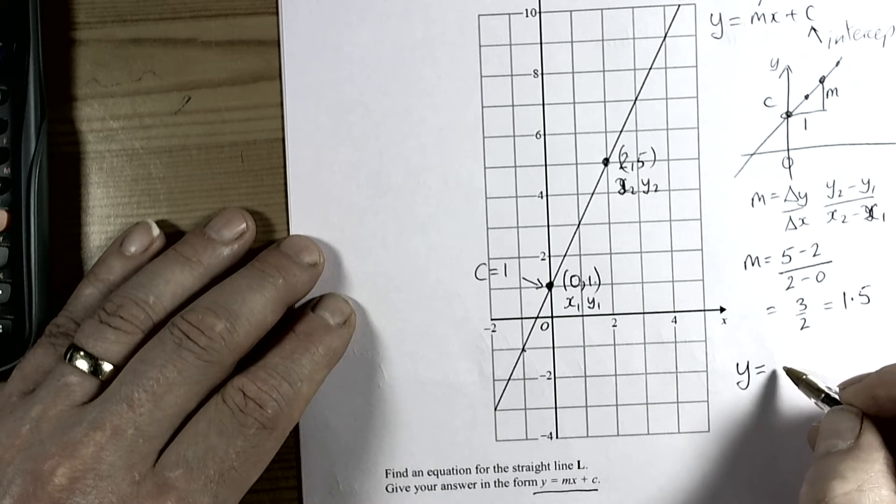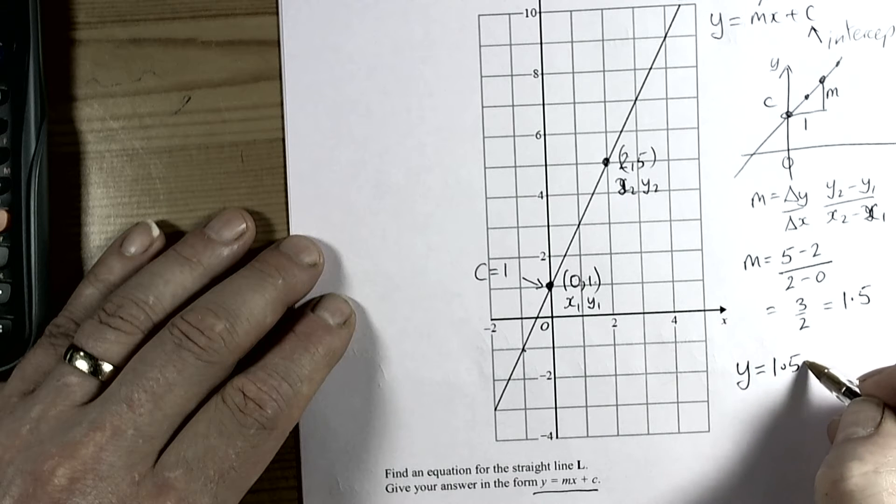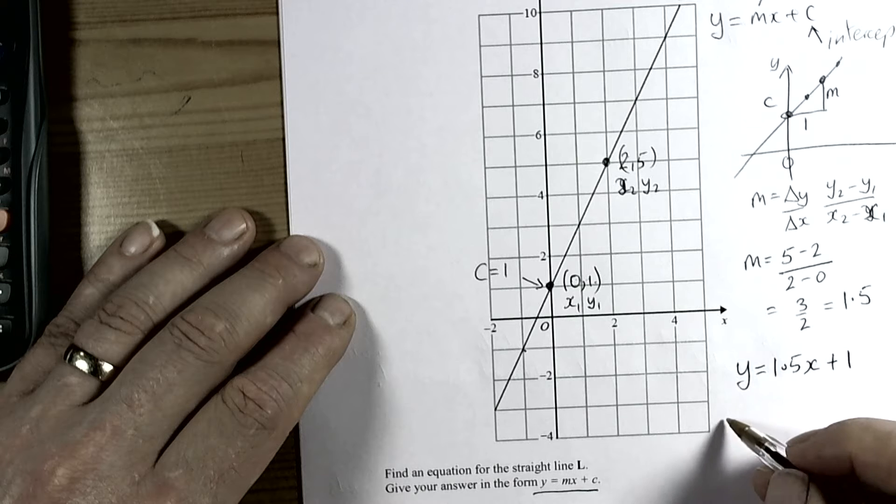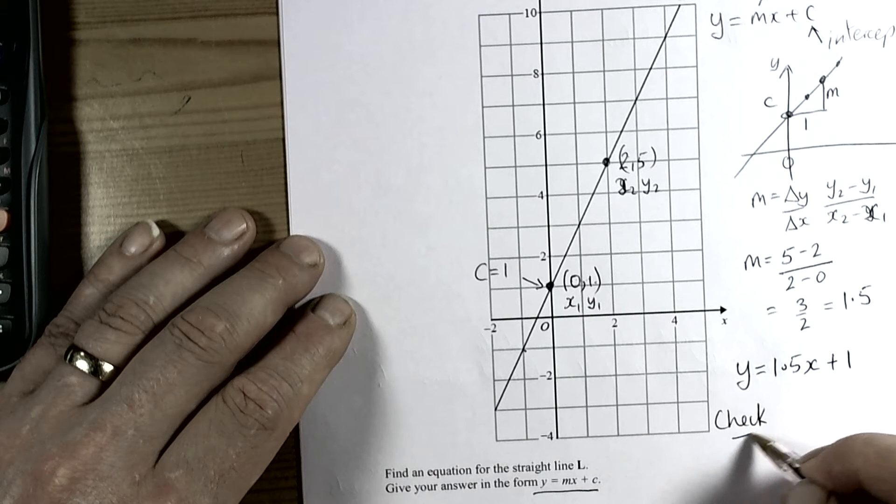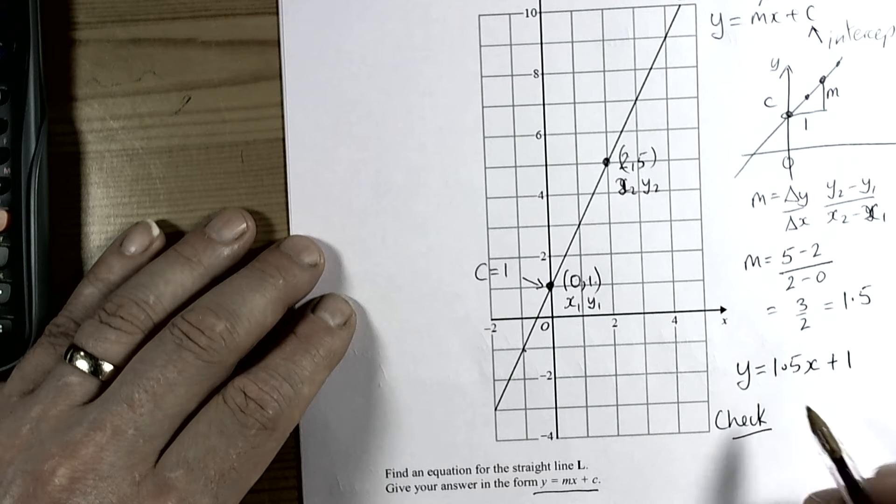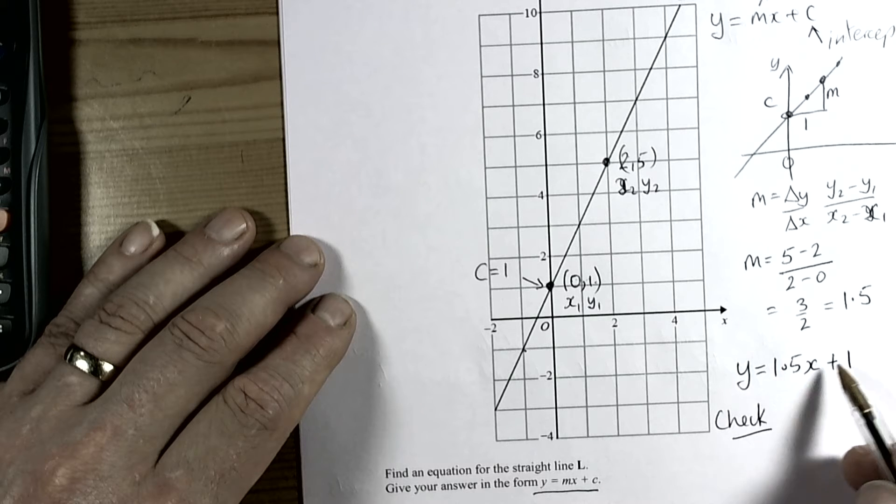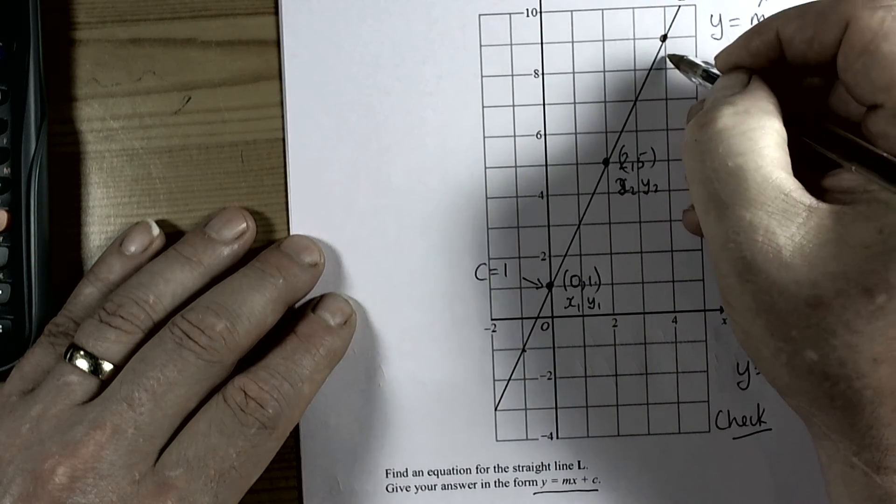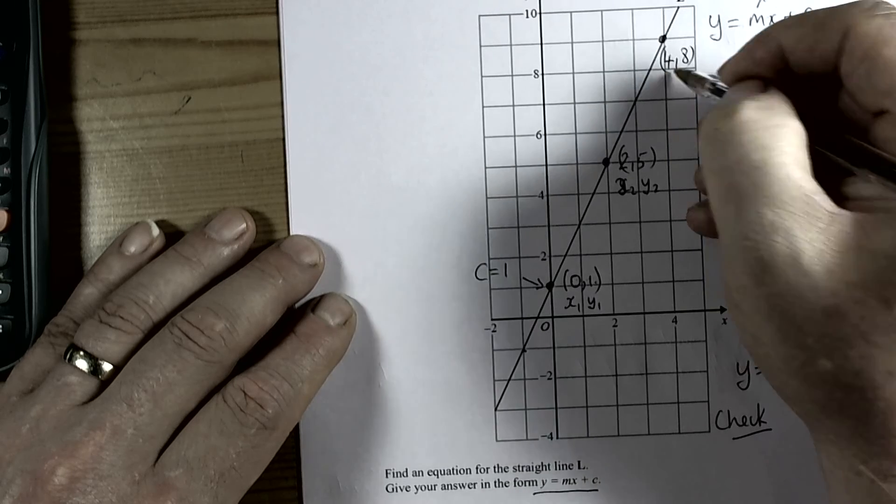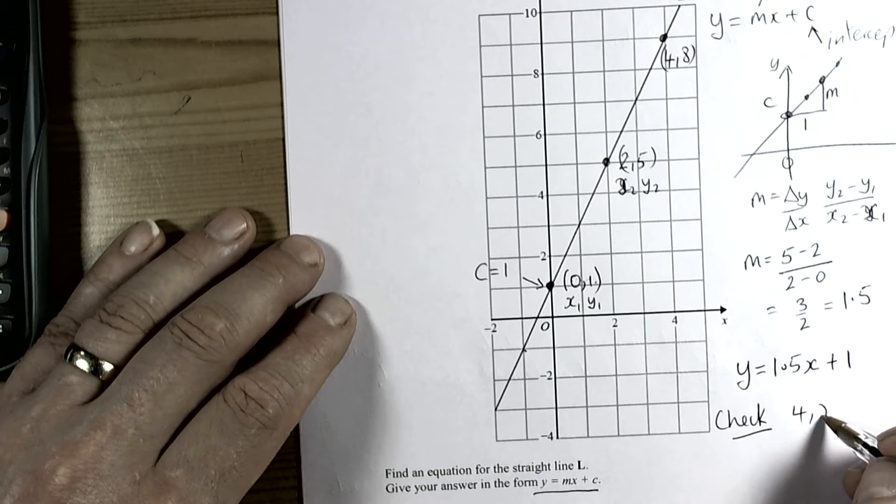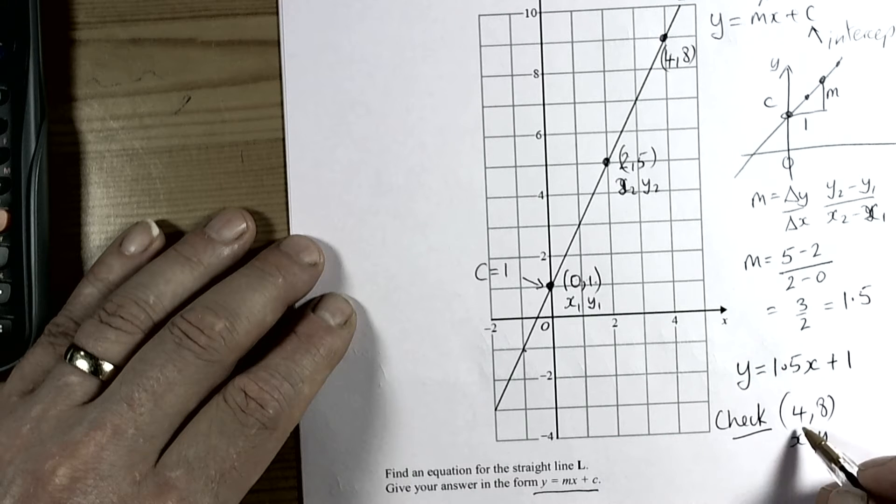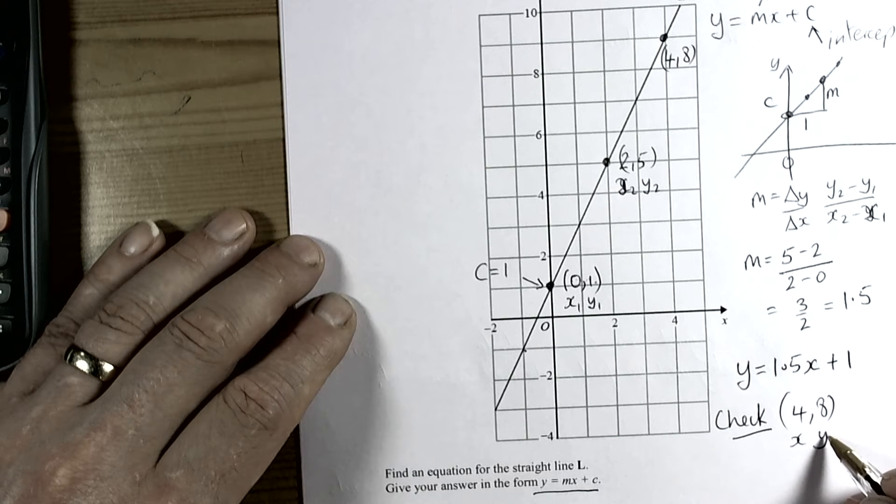So our answer for this question is y equals 1.5x plus 1. Now we should check that we've calculated this correctly, because whatever this equation is for the straight line, it has to work for every coordinate. If I take this coordinate here of (4, 8), if this equation works, then when I put the x value of 4 in, I should get the y answer of 8.